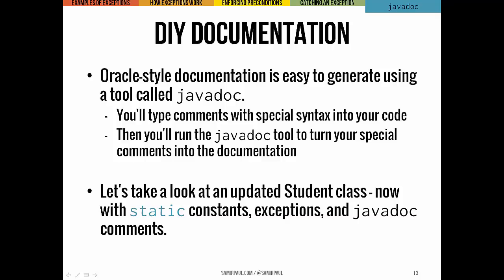We'll shift gears for just a moment and cover one little miscellaneous topic. If you've used any of the online Java documentation, you've seen the way it looks for all the standard Java classes. All that documentation is created using a tool called JavaDoc, and you can make the same kind of professional-looking documentation for your own classes as well. You're just going to include in your .java files some special commenting syntax that marks the information that's going to appear in the doc pages. Then you just run the JavaDoc tool and it's going to turn your comments into documentation.